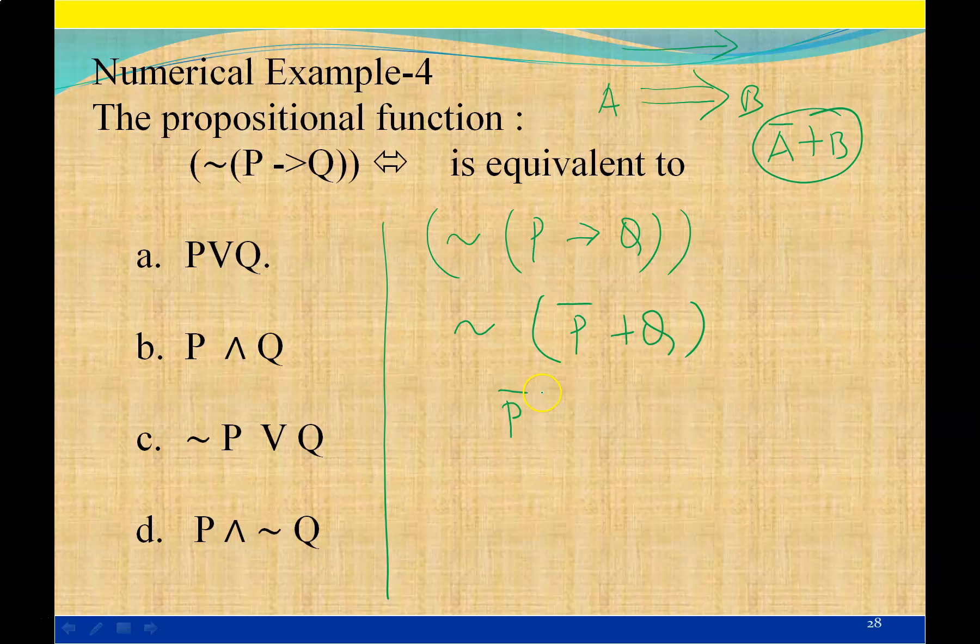negation, (P' + Q) complement becomes P dot Q complement, which gives P intersection Q negation (P ∩ Q').